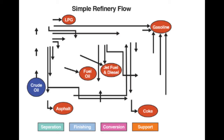Here we will go over a very simple refinery flow — a much simpler scheme than covered in lesson one, which included different types of refinery processes: separation, finishing, conversion, and support. What we would like to do is connect crude oil feed to the major refinery products: LPG, gasoline, jet fuel, fuel oil, asphalt, and coke. Note the number of arrows pointing to gasoline, which shows its significance as the major product in U.S. refineries.